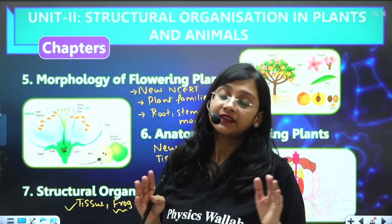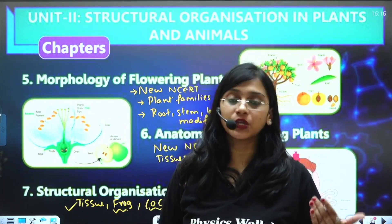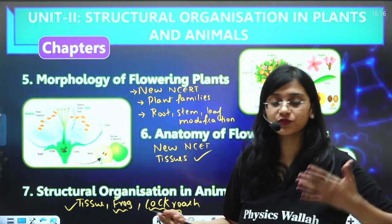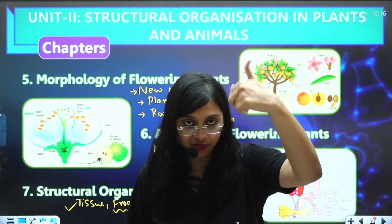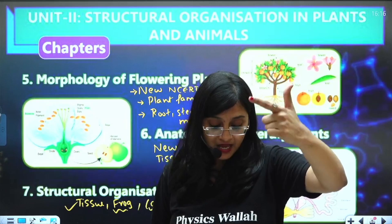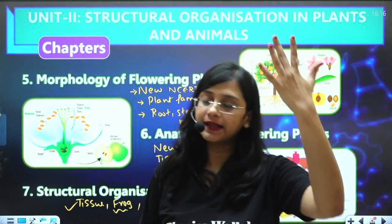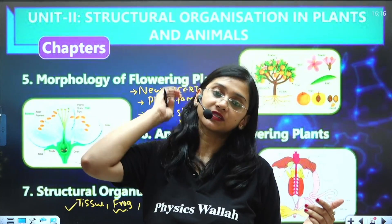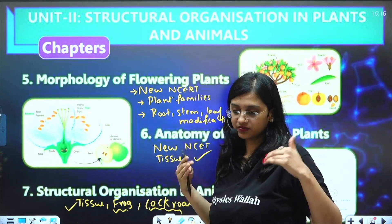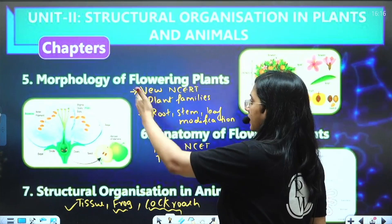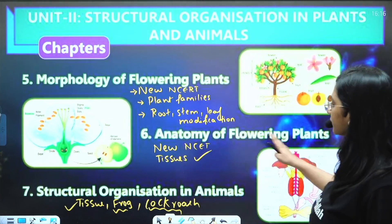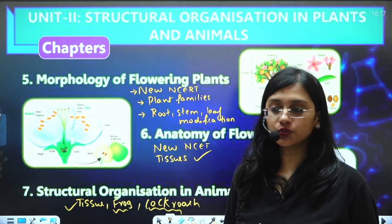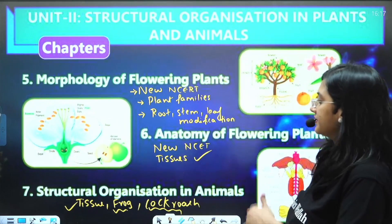For Morphology of Flowering Plants, which has major changes, definitely use new NCERT. Along with new NCERT, also study plant families: Malvaceae, Cruciferae, Graminae, Compositae, and Leguminosae — these five families are important. Also study root, stem, and leaf modifications, along with the practical part of this chapter. For Anatomy of Flowering Plants, use new NCERT and study tissues and a bit of secondary growth.